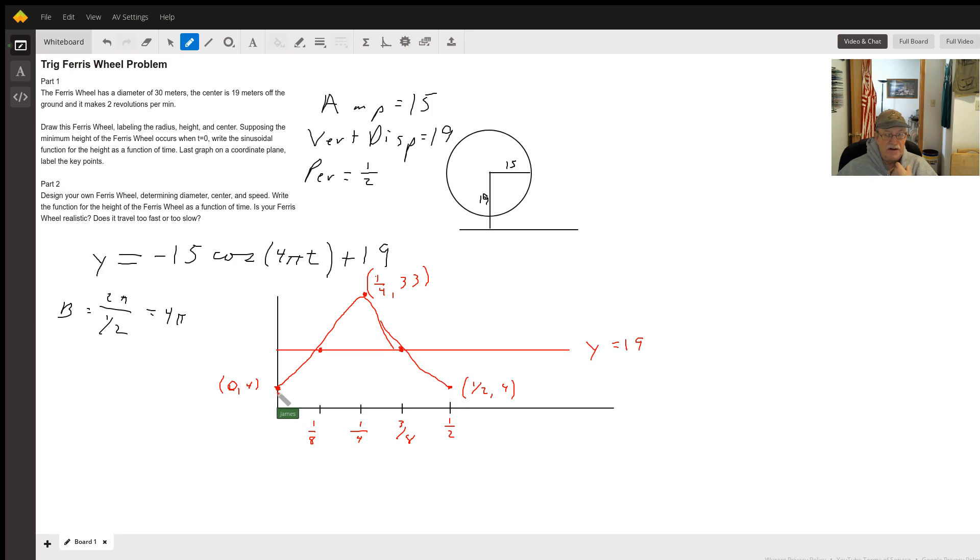We start here at zero four, we go through the center line in one-eighth of a minute, in one-quarter of a minute, we're at the top of the ferris wheel. At three-eighths of a minute, we're back at the center line. And after one-half of a minute, we're back down to the bottom of the ferris wheel.